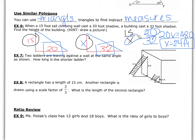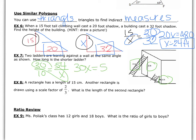In example 7, two ladders are leaning against the wall at the same angle. We set up a proportion using the height of the wall and the ladder lengths. Cross multiply: 30X equals 540. So the shorter ladder is 18 feet long.